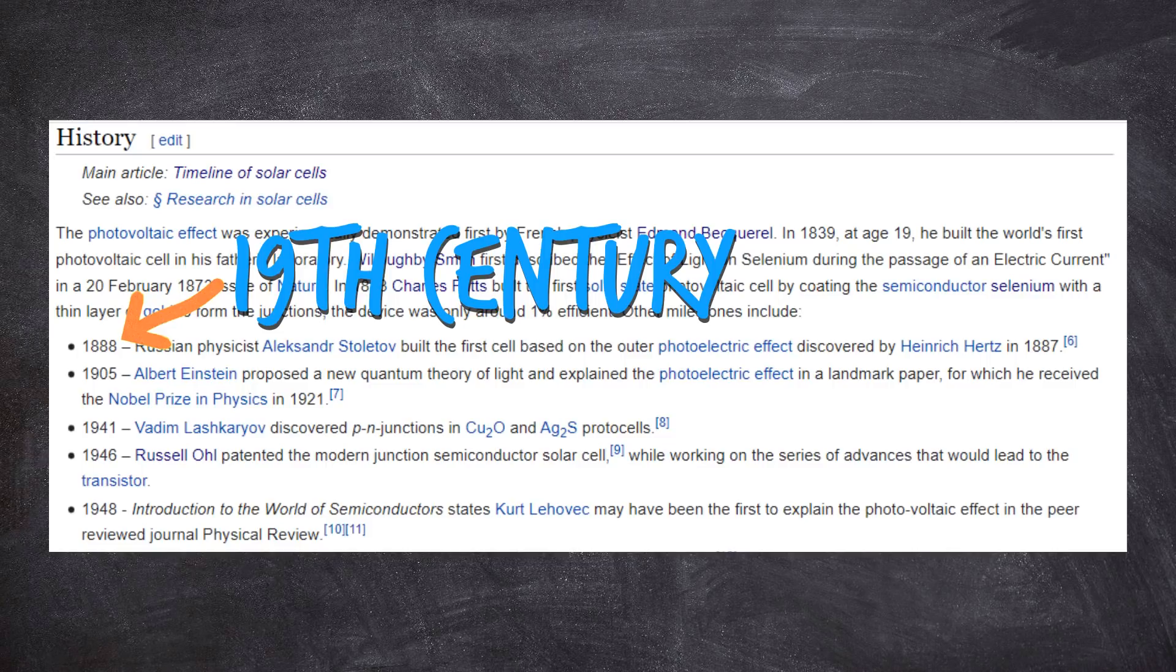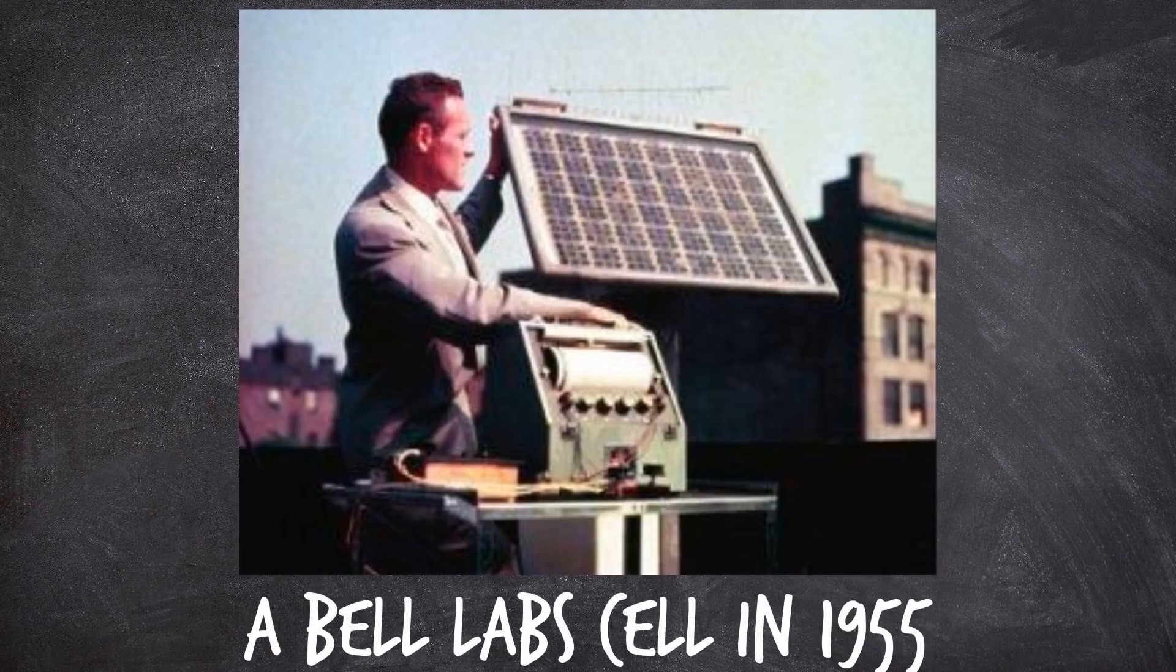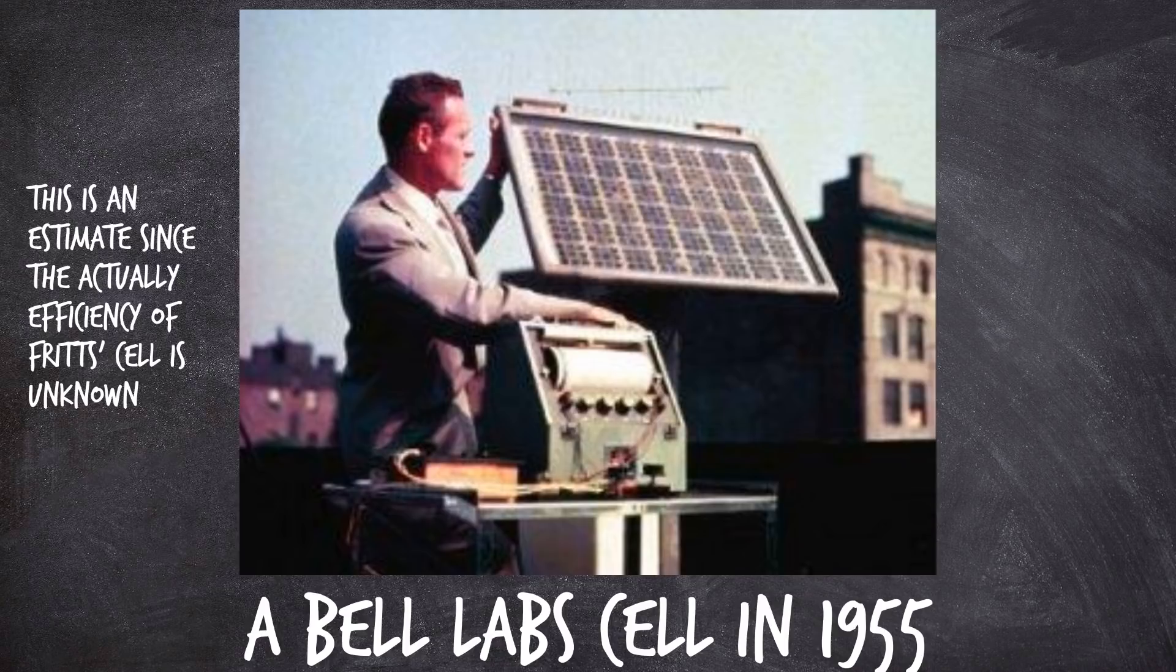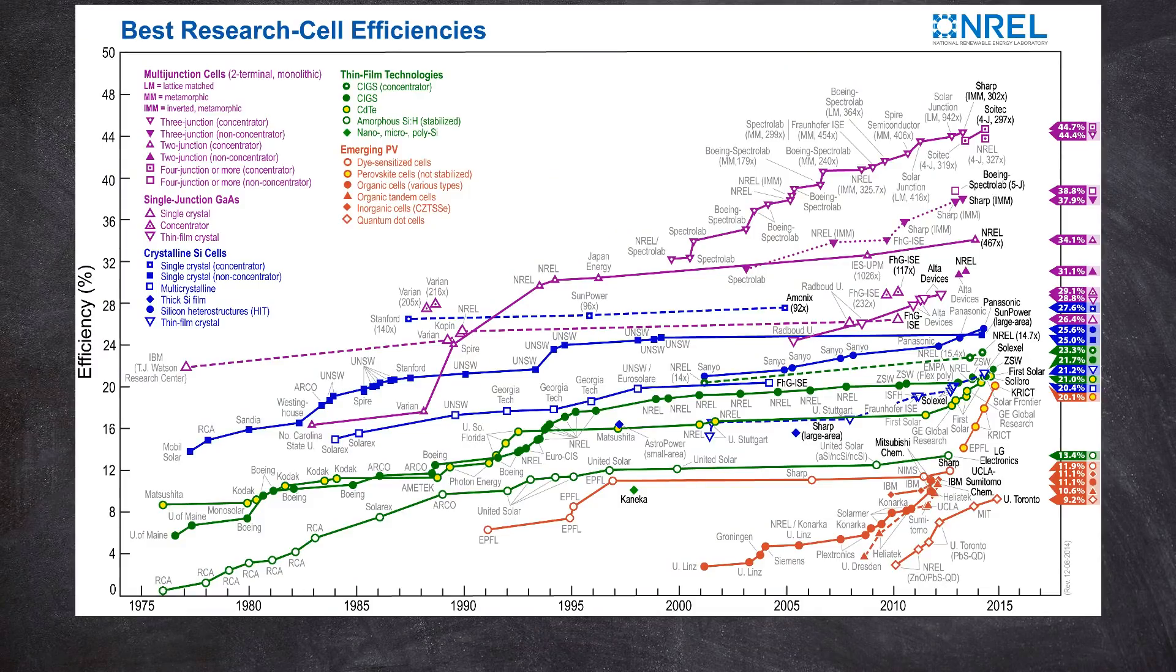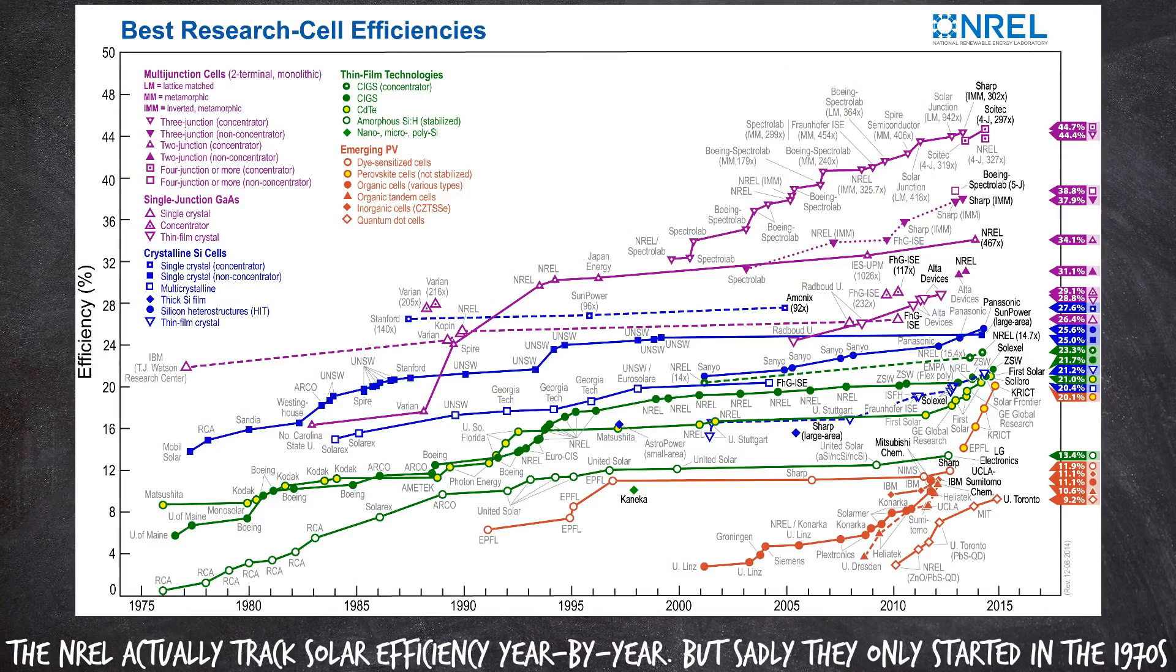Really, no progress at all until 60 years later, in the 1940s, where the first modern cell was built at a place called Bell Labs. And that cell had an efficiency about 10 times higher than the Fritz device. And it's from that time, in the 1940s onwards, that we then start to see the steady year-on-year improvements of a developing technology. A quantum technology.